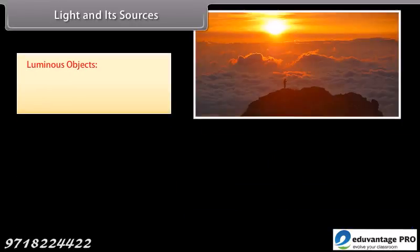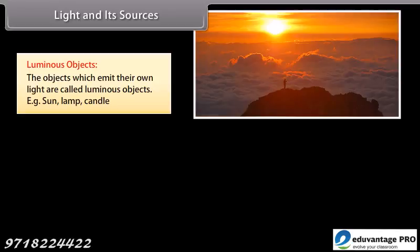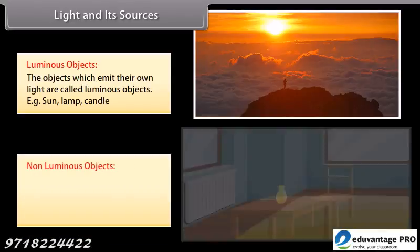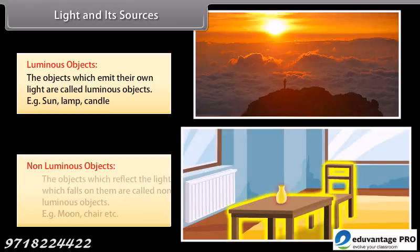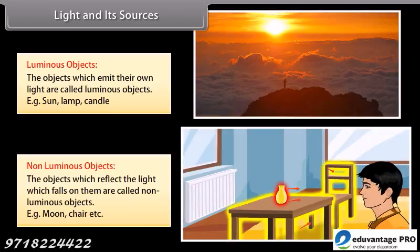Luminous objects are objects which emit their own light, for example: sun, lamp, and candle. Non-luminous objects are objects which reflect the light which falls on them, for example: moon, chair, etc.